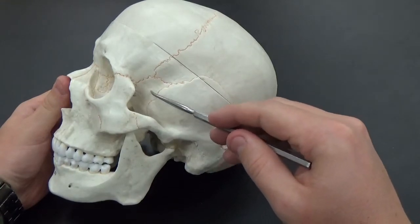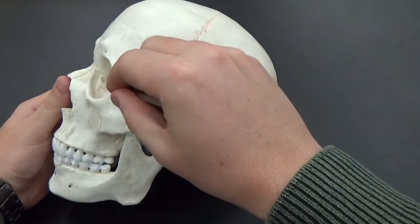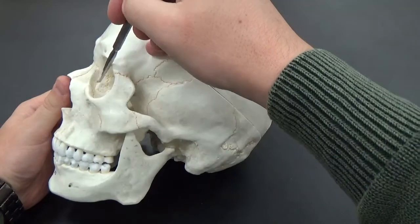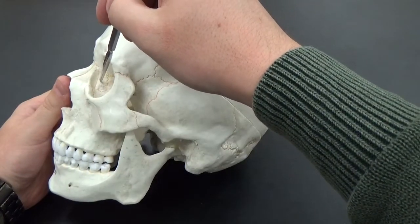You can see the sphenoid bone right here as well, and the lacrimal bone is right here inside, just inside the nose.